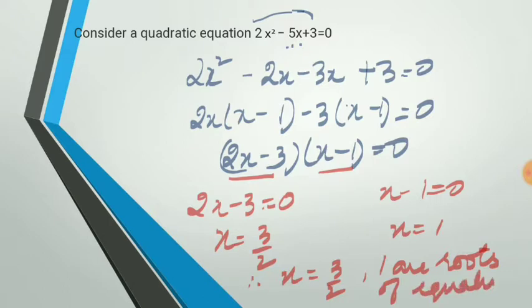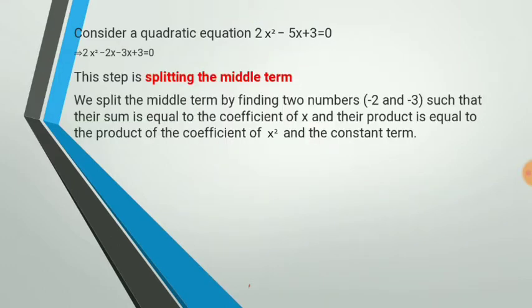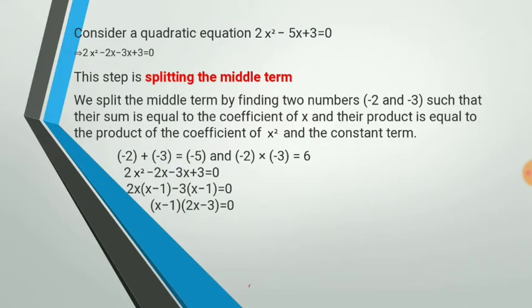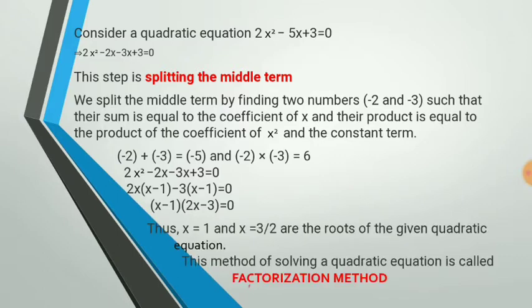If you had solved for the zeros of the polynomial 2x² - 5x + 3, the zeros would also come out to be 3/2 and 1. We solved it by splitting of the middle term, and this method is called factorization.